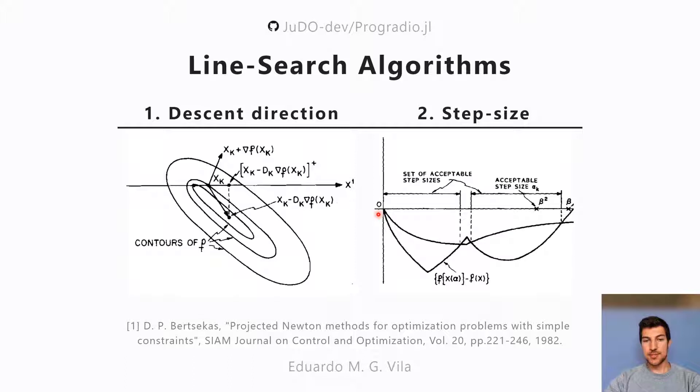After you have the descent direction, you want to solve the step size computation problem, which basically you take a slice along that direction and you want to find what the appropriate step size would be. Then once you have the step size along with the direction, you know what your next iteration will be.